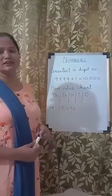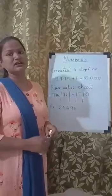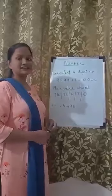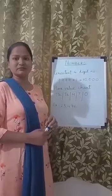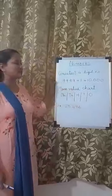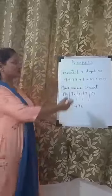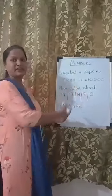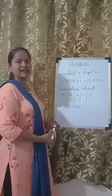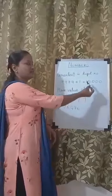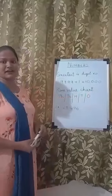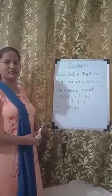As we all have learned numbers up to 4-digit, let us start with the greatest 4-digit number. The greatest 4-digit number, as we know, is 9999. If I am going to add 1 to the number, I will get the number 10,000, which would be called the smallest 5-digit number.